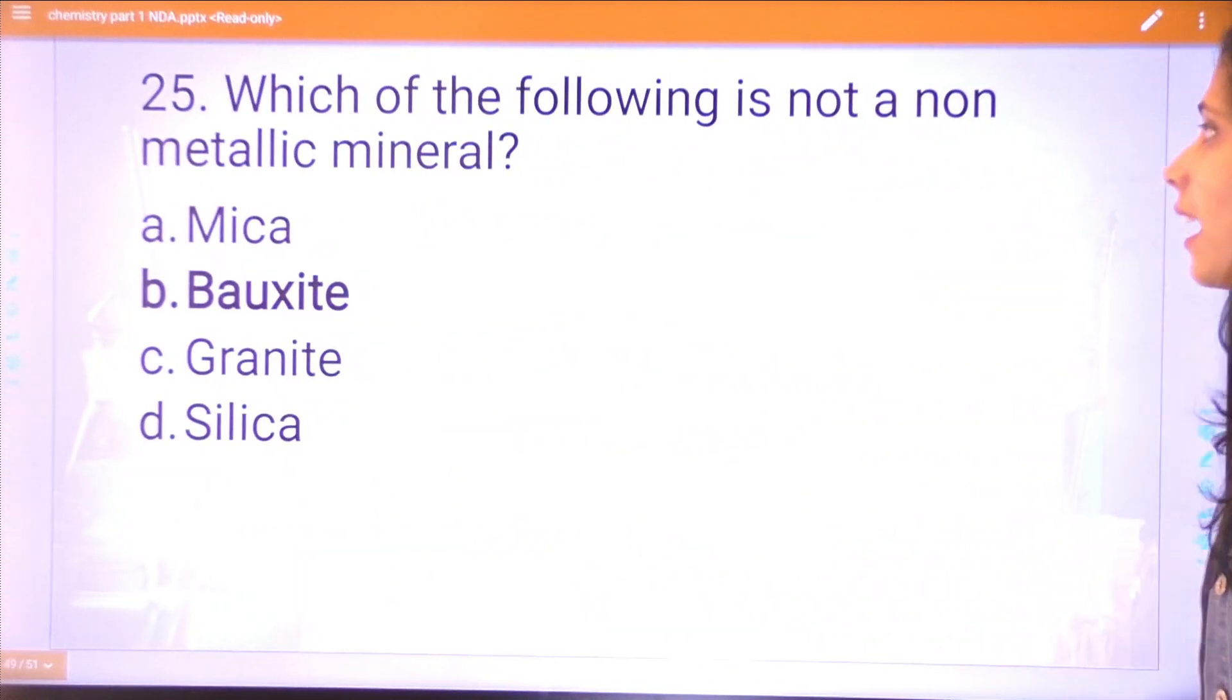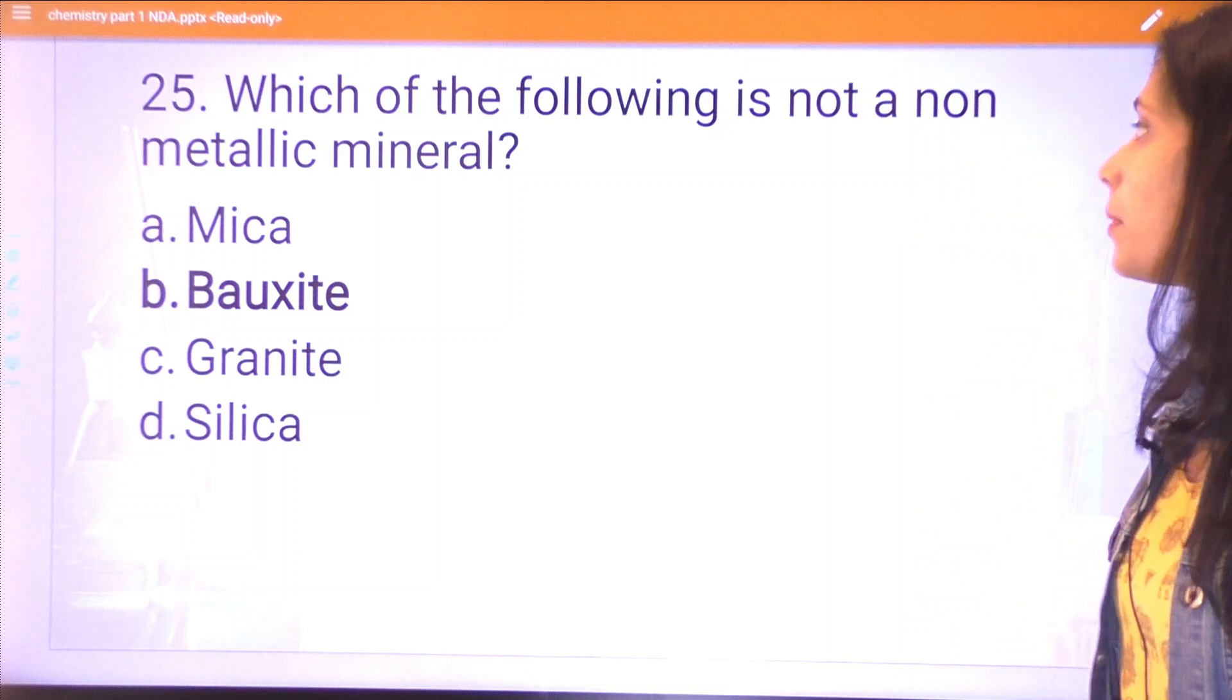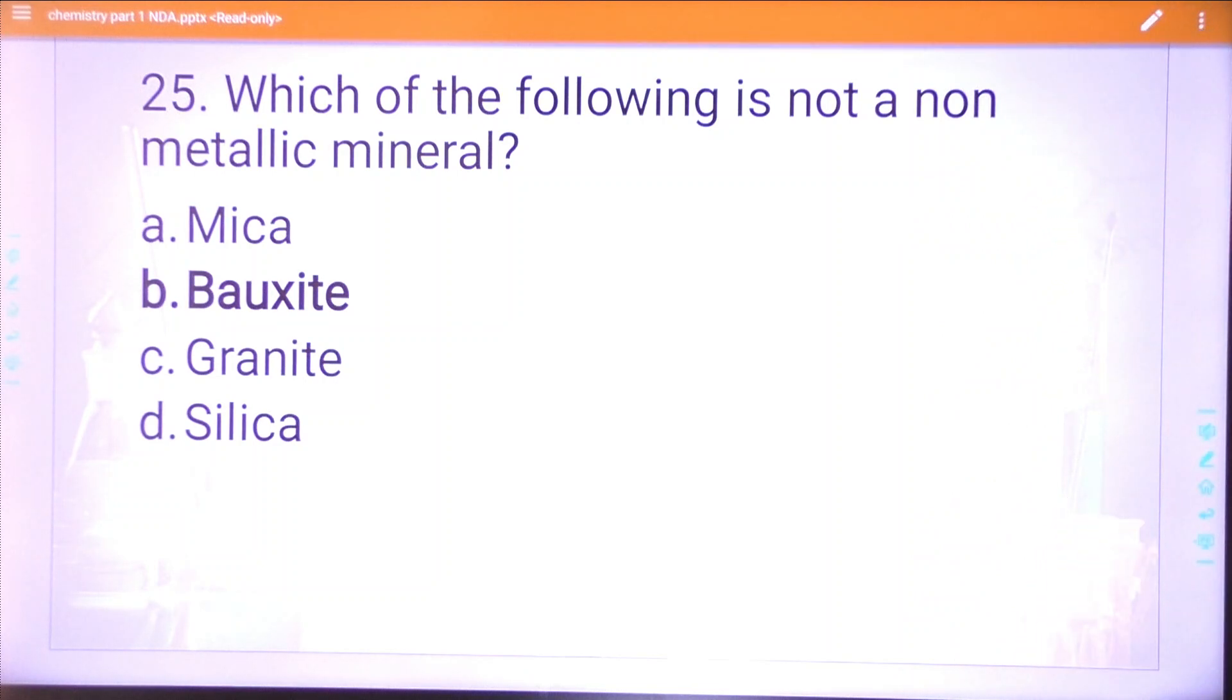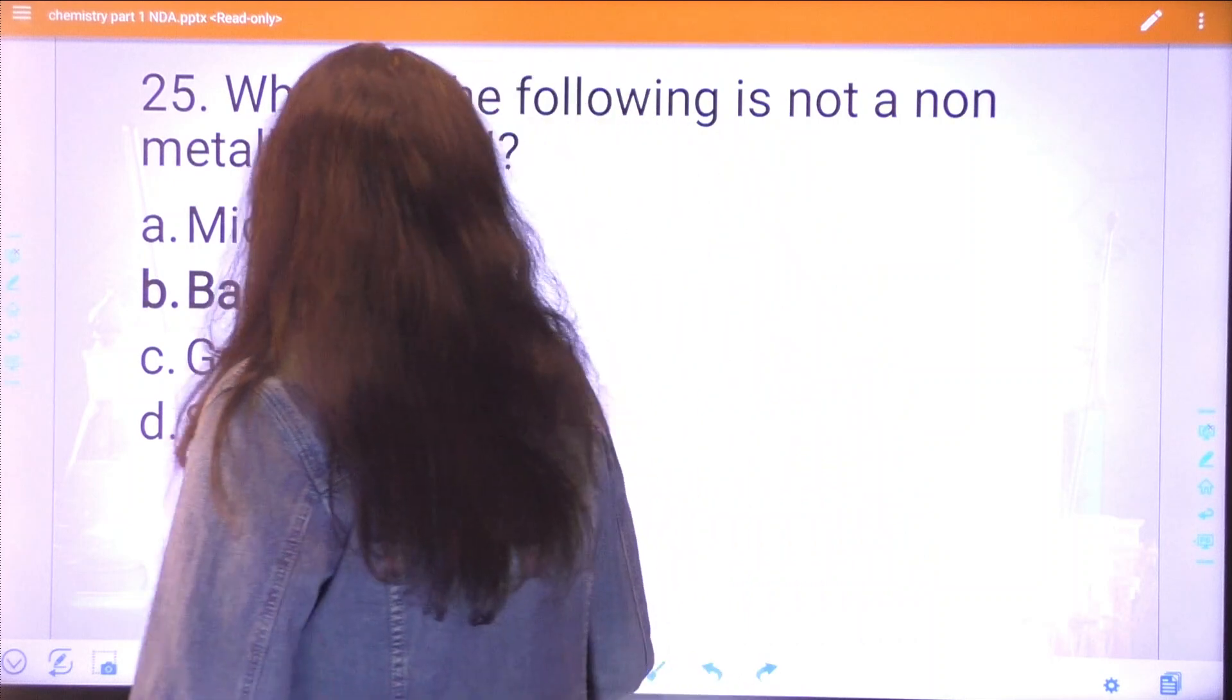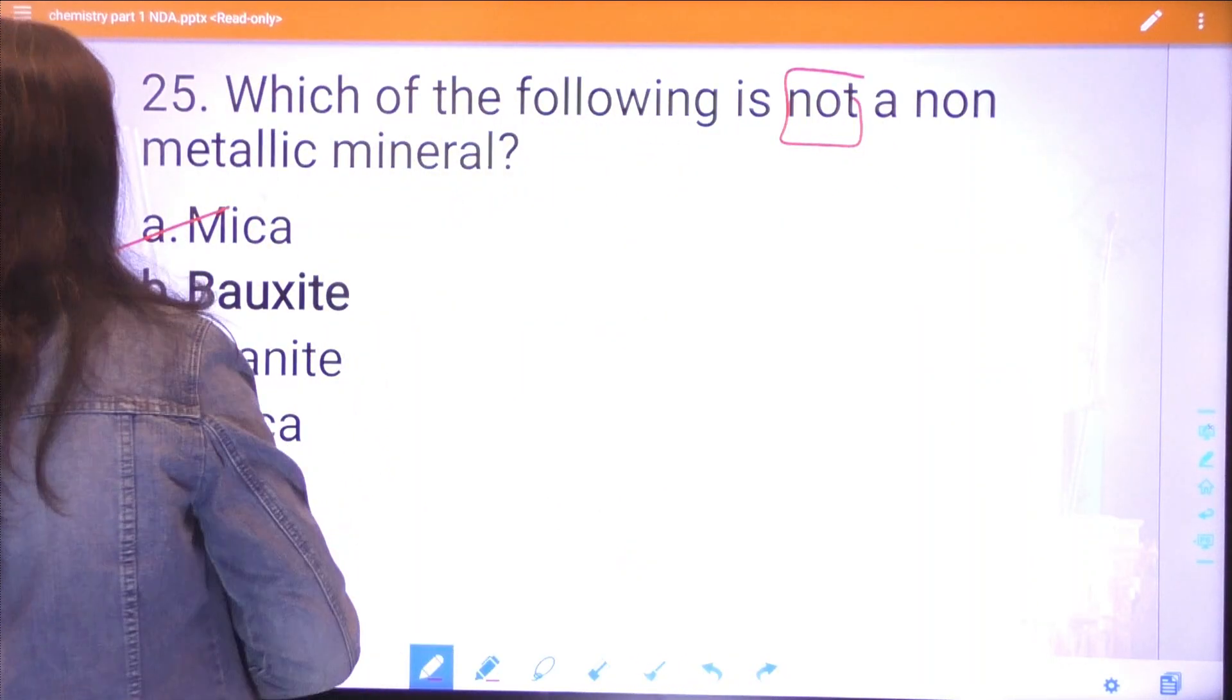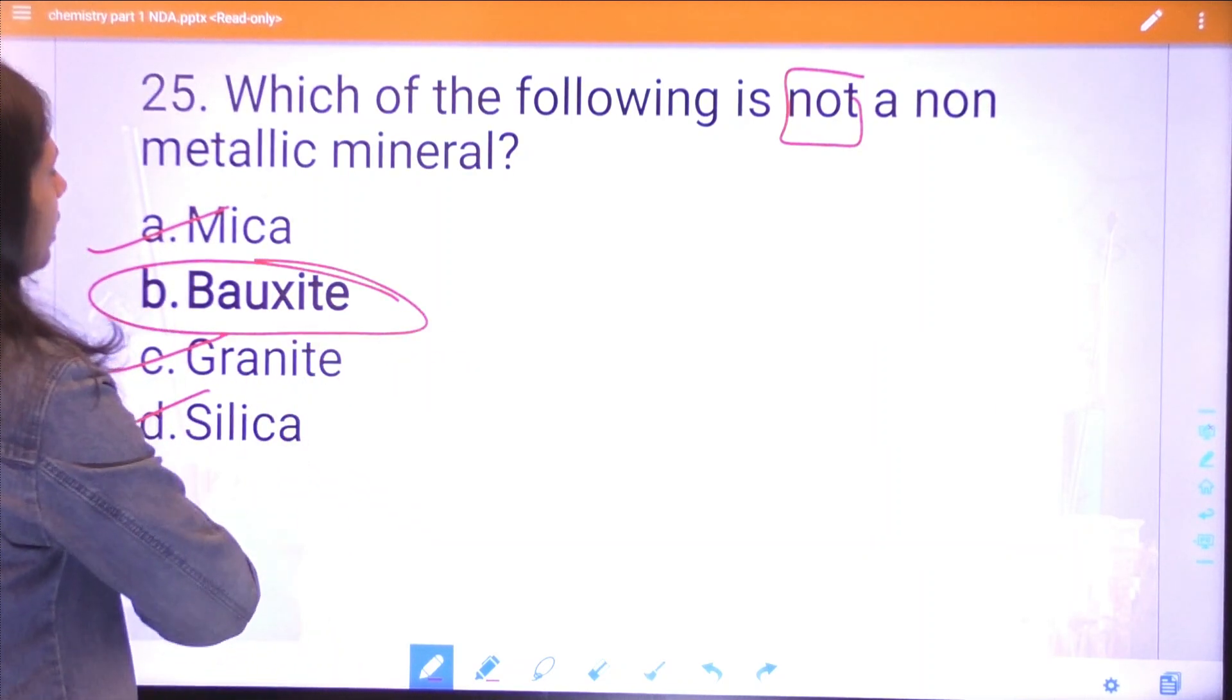The last question of today's lecture: which of the following is not a non-metallic mineral? We have some metallic minerals and some non-metallic minerals. Mica is a non-metallic mineral, granite and silica too, but bauxite is aluminum, which is not a non-metallic mineral.